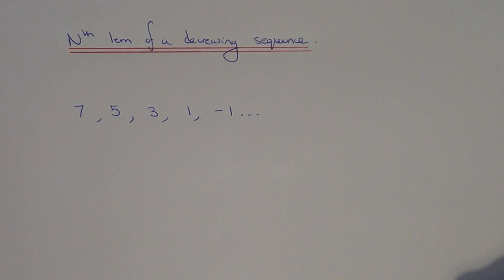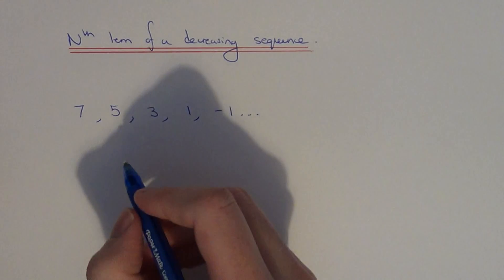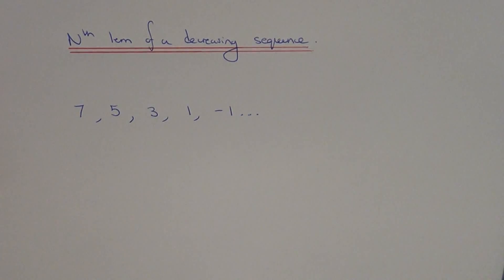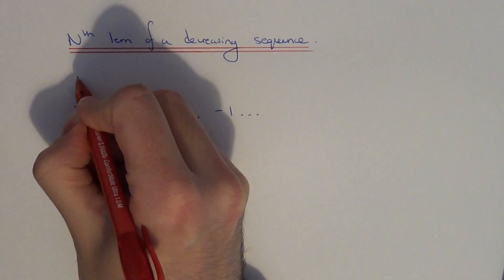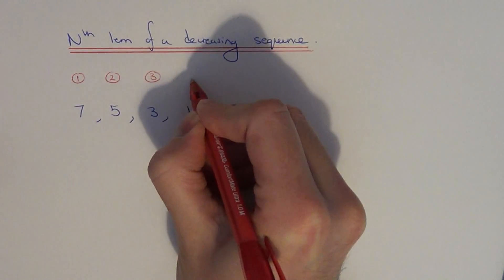Today I'm going to show you how to work out the nth term of a decreasing linear number sequence. First of all, write the numbers 1 to 5 above the top of your sequence.